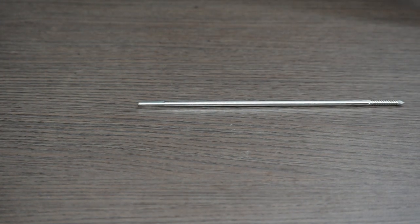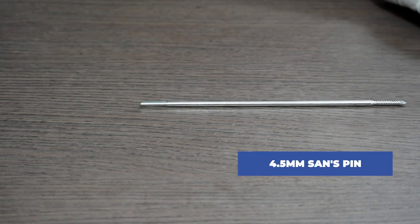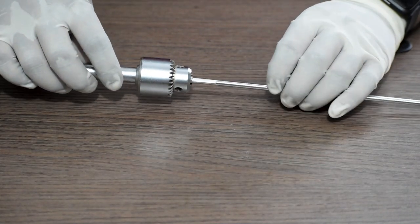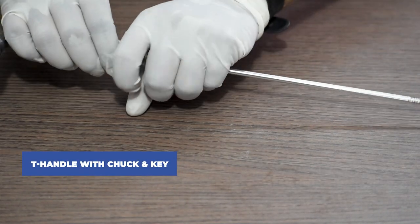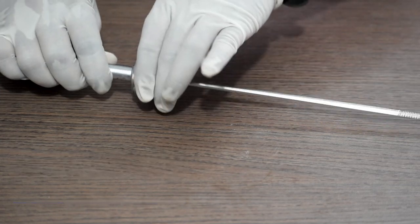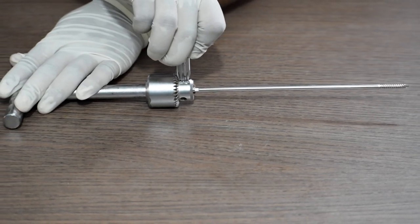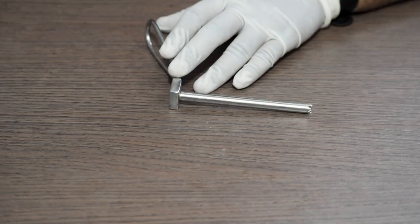Then we will take a 4.5 mm Schanz pin. We will attach the 4.5 mm Schanz pin in the T-handle with chuck and then use the key to tighten this Schanz pin in the T-handle.